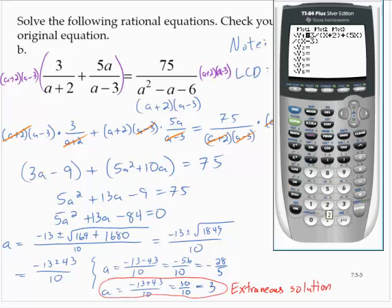The right-hand side I'll put in as my y2. And so that would be 75 divided by quantity x squared minus x minus 6. And I'm just going to use the table feature.